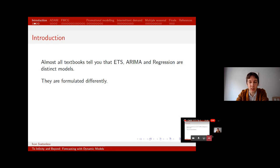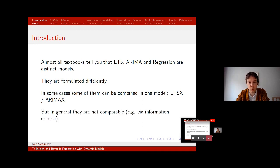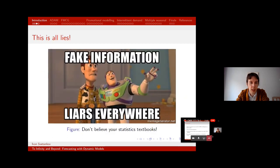At the same time, almost all textbooks will tell you that these three are distinct models. They are typically formulated differently and as the result, yes, you can sometimes combine them. For example, ETSX, so ETS plus regression or ARIMAX, ETS plus regression. But in general, they are not comparable with each other. At least not comparable using statistical methods like information criteria and so on. So in general, in the perception of statisticians and forecasters, it's just different techniques that you can apply to the data. Well, this is all fake news, fake information lies everywhere. I don't believe your statistical textbooks.